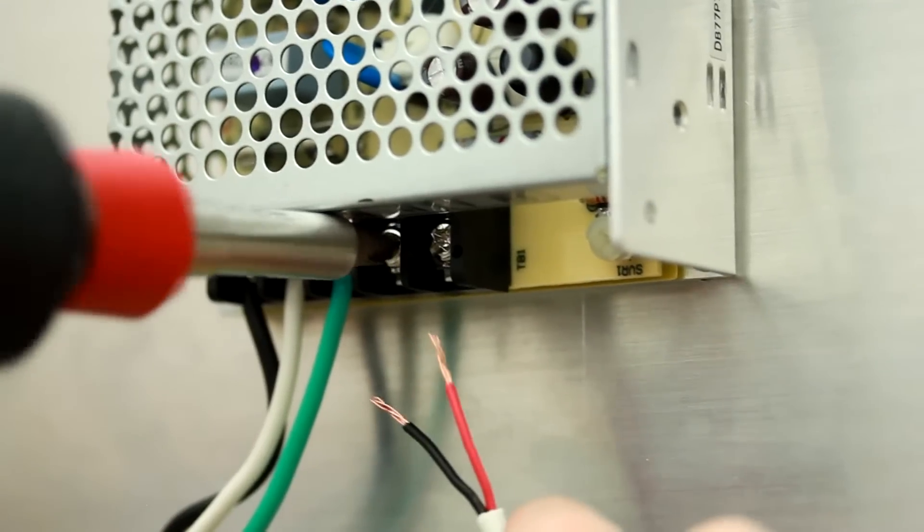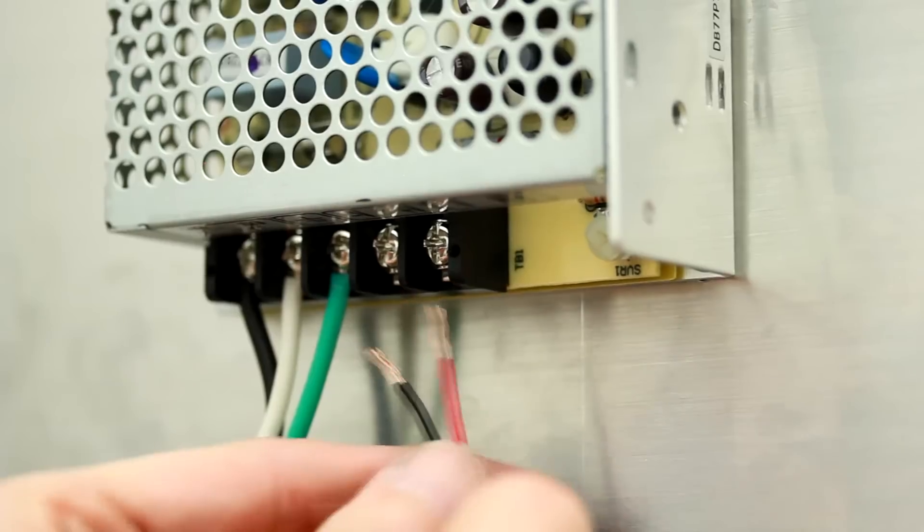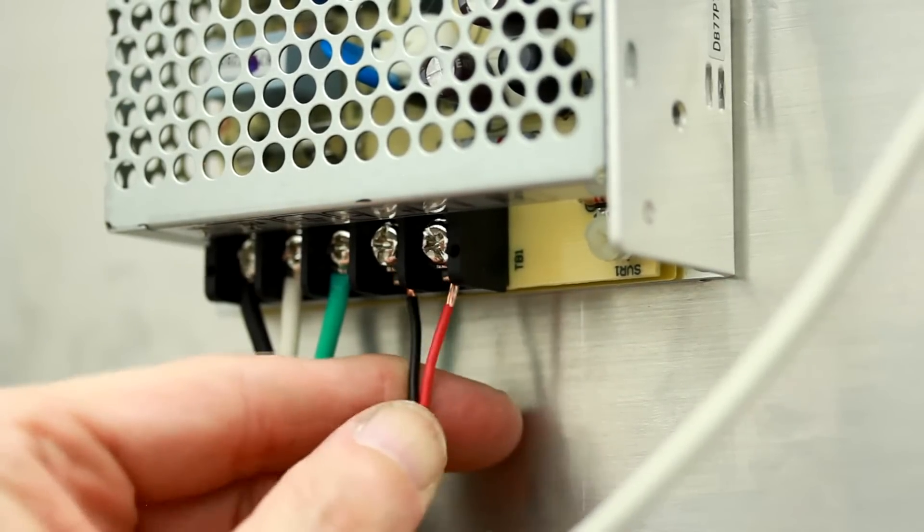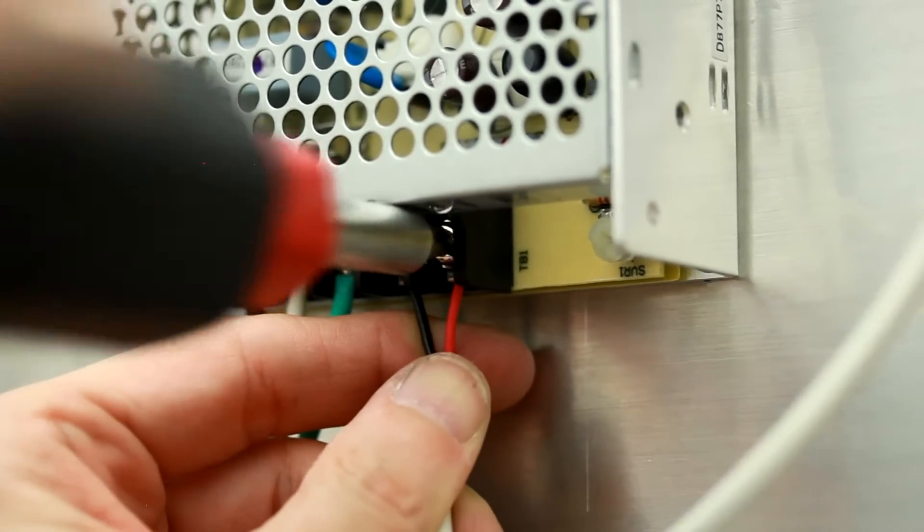At the 24 volt power supply, connect the black wire to the V minus, which is the ground, and connect the red wire to the V plus, which is the 24 volt positive DC voltage.